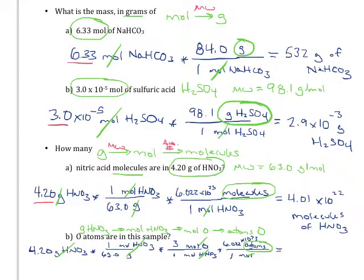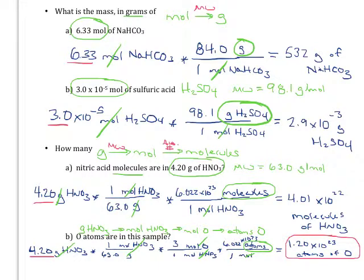Make sure you're practicing and round to three significant figures. Your final answer should be 1.20×10²³ atoms of oxygen. Every time you set up one of these problems, make sure you're thinking through the steps before you do any calculations. Think about what units you're going to convert between and have a game plan in your head before you start doing the math.